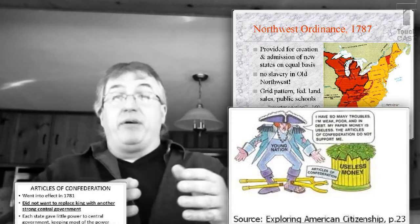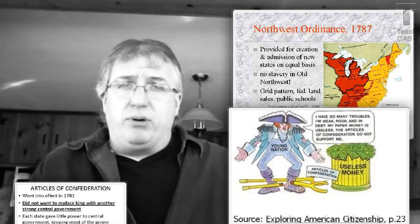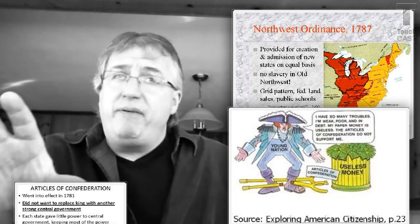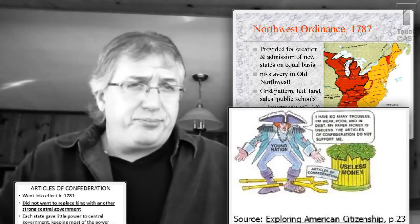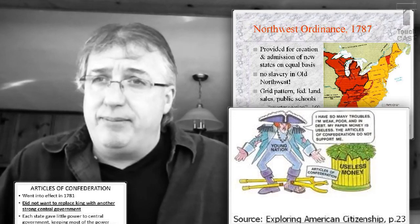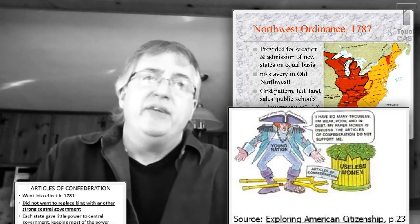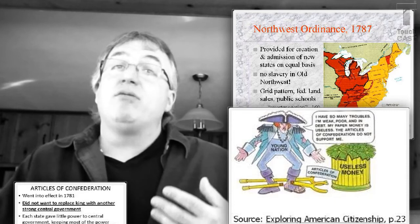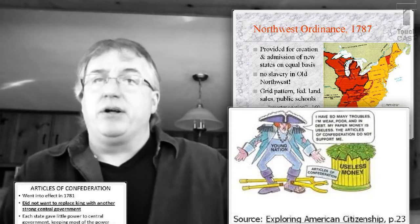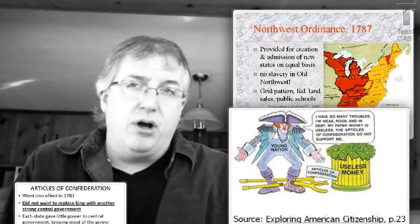Remember: if government can't protect our natural rights, we're supposed to abolish it or change it. Some of the elites — guys like James Madison, Alexander Hamilton, and John Jay — even begin to write papers calling for a stronger government. These will be the Federalist Papers, which we'll discuss later on.